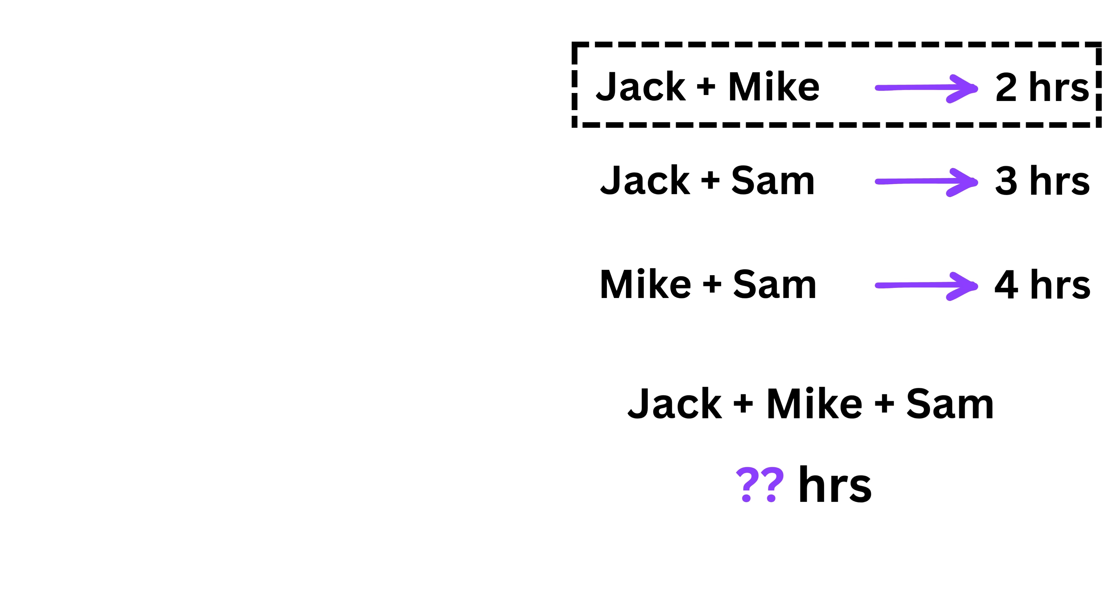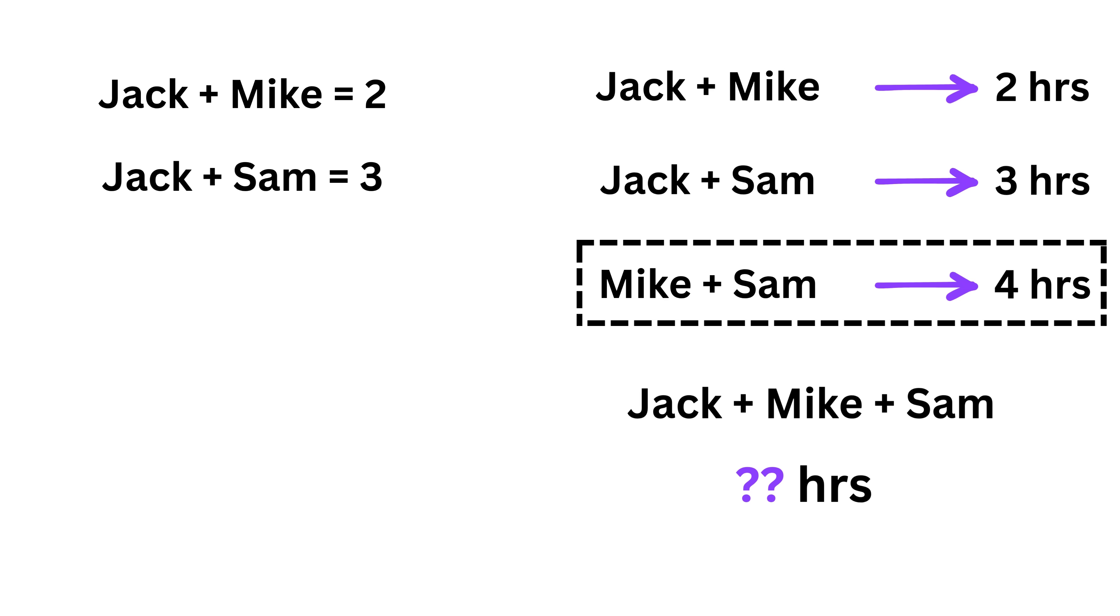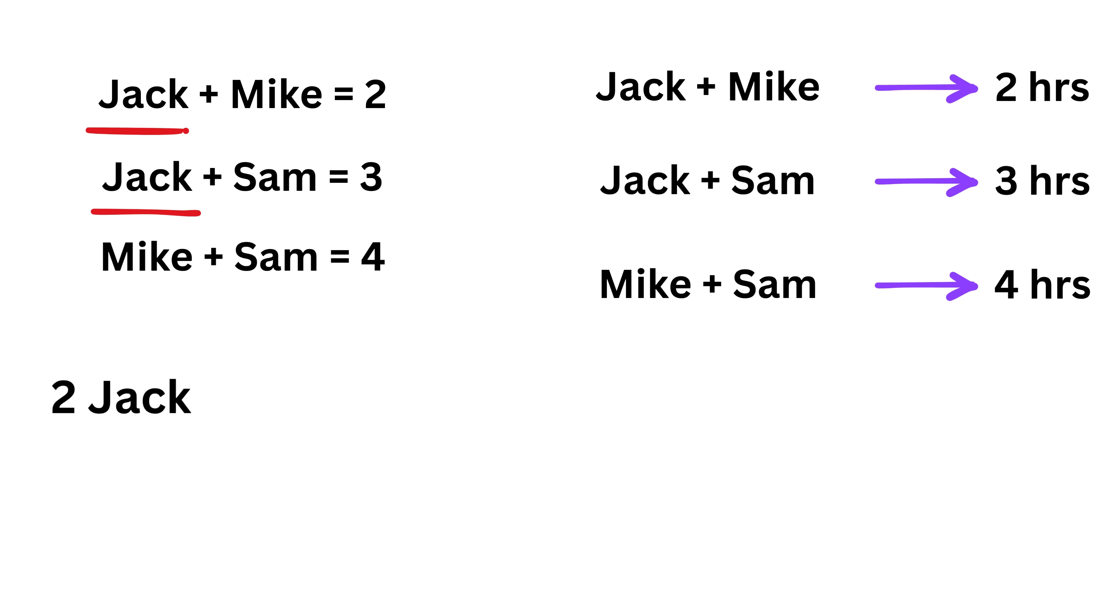Most interviewees read the first line that Jack and Mike can do a job in two hours and think of it as something like this: Jack plus Mike equals two. Then the next line becomes Jack plus Sam equals three, and the third one becomes Mike plus Sam equals four. Now, since the question asks for the time taken by all three working together, they add up all three statements and get two times Jack plus two times Mike plus two times Sam equals the sum of two, three, and four, which is nine. Then they divide both sides by two and say Jack plus Mike plus Sam equals four and a half. So they think that all three of them together will take four and a half hours to finish the job.